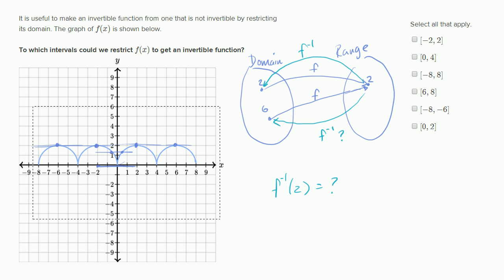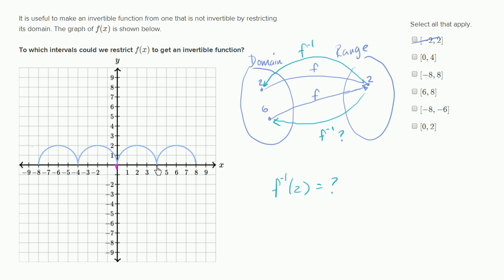The second interval, between zero and four, is also not passing the horizontal line test — rule that out. Negative eight to eight doesn't even restrict the domain relative to what we had before, so that's not going to work either.